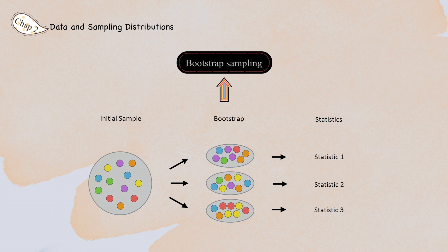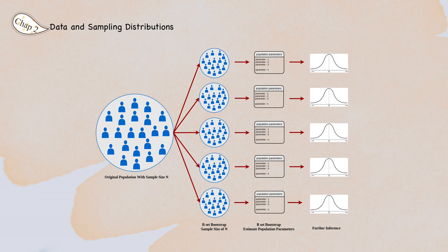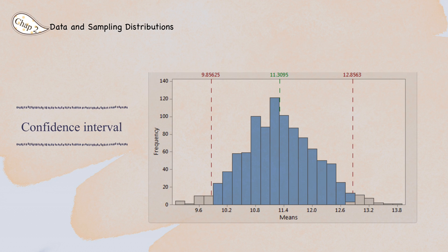Bootstrapping means drawing several samples with replacement from a sample itself and recalculating the statistic or model for each resample. From a data science perspective, knowing how bootstrapping works is very useful for understanding some machine learning models that rely on this method, such as random forests. It should be noted that the bootstrap does not compensate for a small sample size — it does not create new data, but merely informs us about how additional samples would behave when drawn from a population like our original sample.